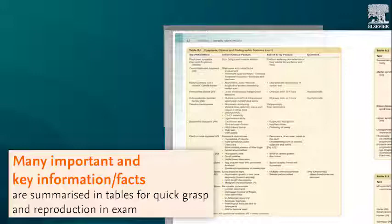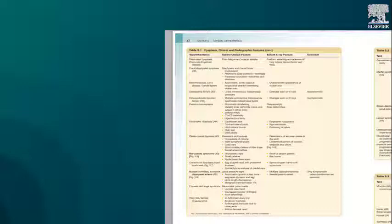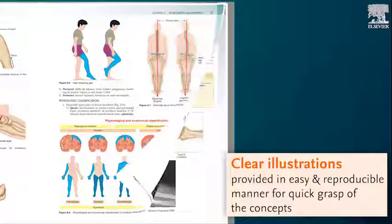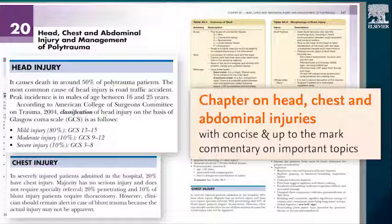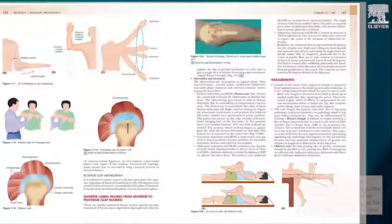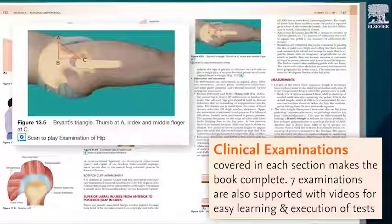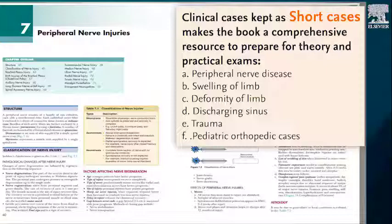Information given in tabular form throughout the book makes it easy to comprehend and recall during exams. The book includes excellent illustrations and images that make concepts easy to grasp, taking minimal time. The chapter on head, chest, and abdominal injuries gives very useful reference to surgical short notes on important topics. Clinical examinations have been written in each section and are also demonstrated with the help of videos.